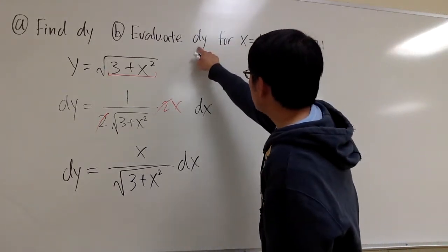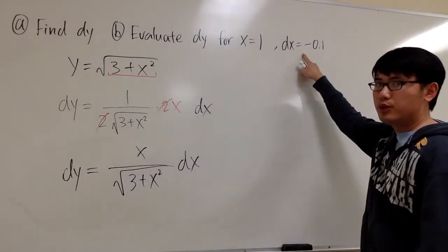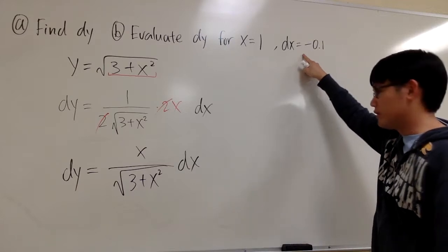And the second part is we are going to evaluate dy. dy is going to be a number when you plug in x equals 1 and dx equals negative 0.1. So let's go ahead and do our work.